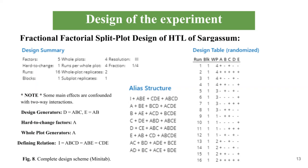Finally, in the randomized design table, the most important part is the coding of the elements of factor A, which are split into the four whole plots: the first with the high level, the second and third with the low level, and the fourth with the high level again.